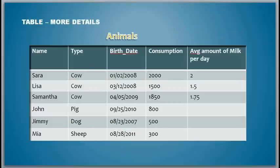So we go to this slide where he had listed out more details and right now we will just take the table 'animals' into our consideration and look into the various elements that are part of the structure of the table. So like we discussed in the previous video, we know that we have columns. Name is a column, type is a column, birth_date is a column, consumption is a column, average amount of milk per day is a column.